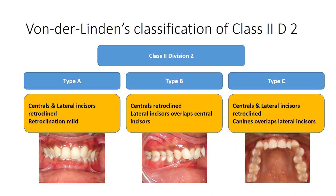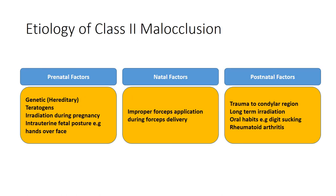Wunderlinden's classification of Class 2 Division 2 divides it into three types. In Type A, both central and lateral incisors are retroclined but the retroclination is mild. In Type B, only the centrals are retroclined, whereby the lateral incisors overlap the central incisors. In Type C, both centrals and laterals are retroclined with the canines overlapping the lateral incisors.